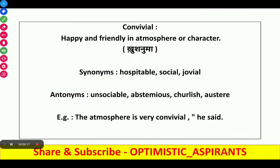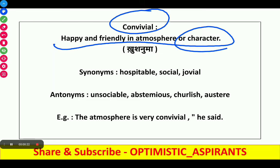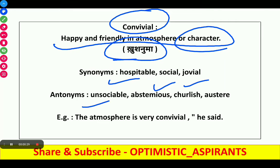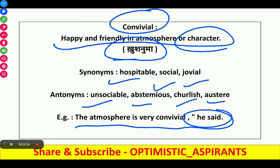The first word is convivial. It means happy and friendly in atmosphere or character. In Hindi it is 'khushnuma'. Synonyms are hospitable, social, or jovial, and antonyms are unsociable, abstemious, churlish, or austere. Example: 'The atmosphere is very convivial,' he said.